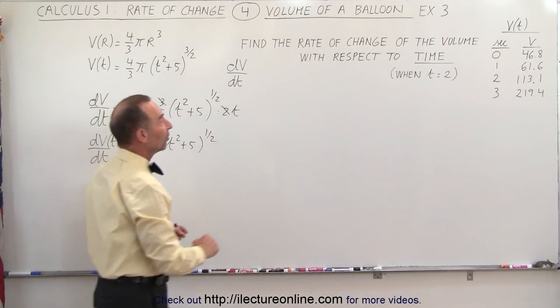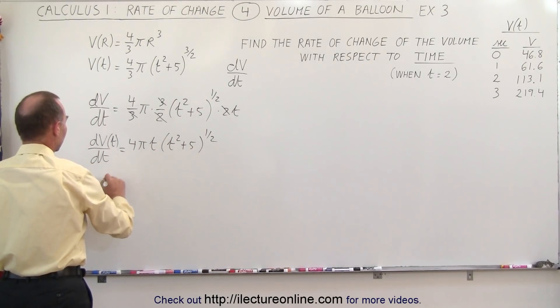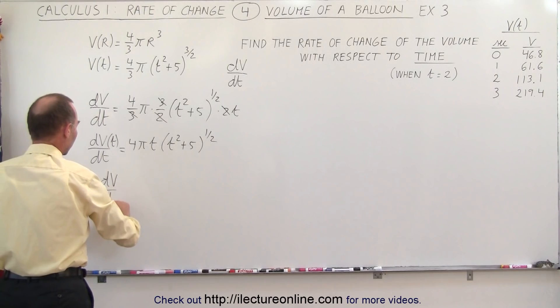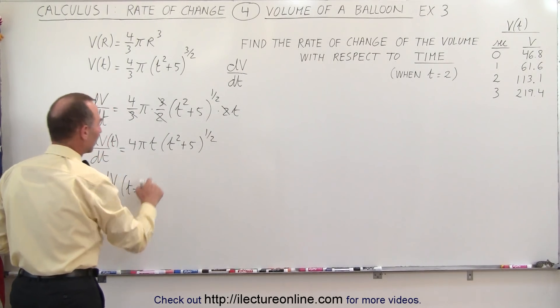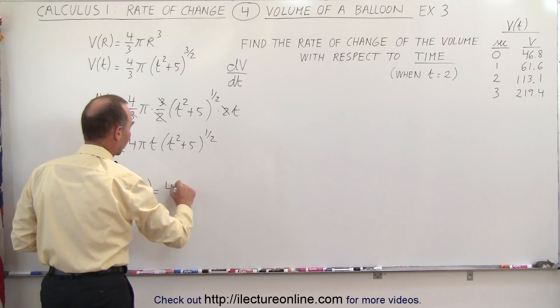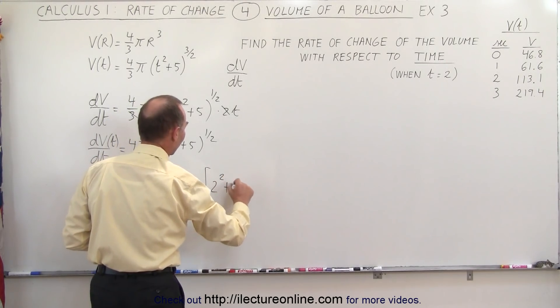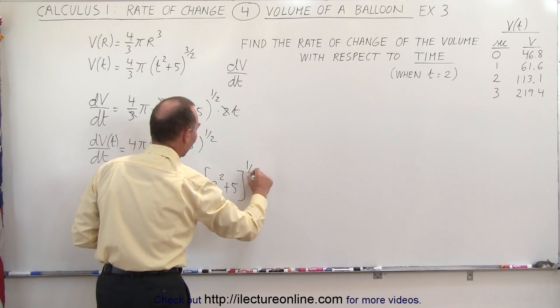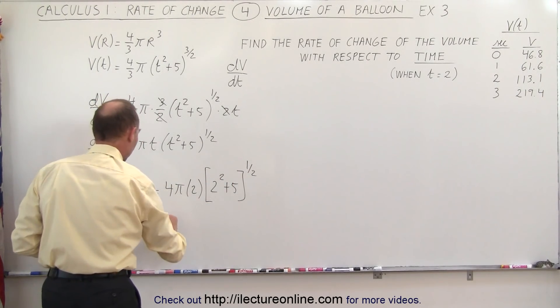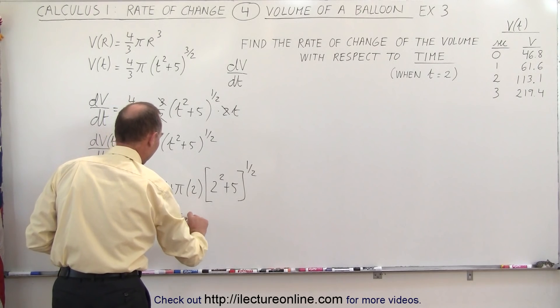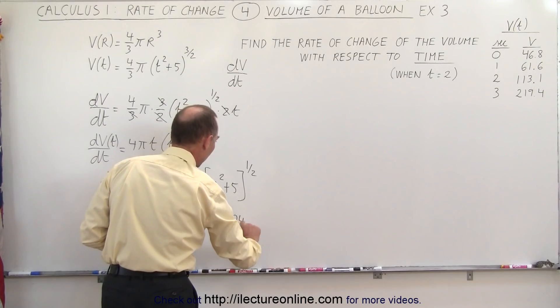So all we have to do now is plug in t equals 2 to get the answer. We can say that this is 4 pi times 2 times the quantity 2 squared plus 5 to the 1 half power. Of course, this is 9 and 9 to the 1 half power is 3, so this would be equal to 4 pi times 2 times 3, or 24 pi.